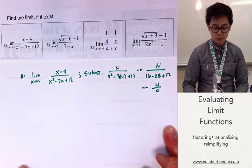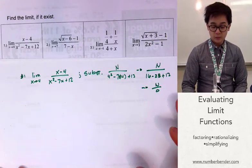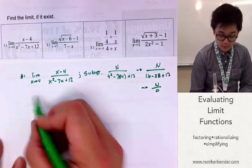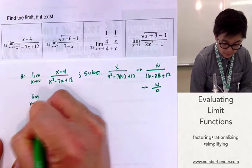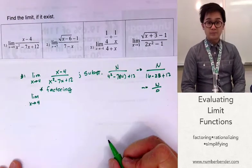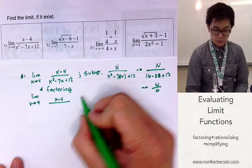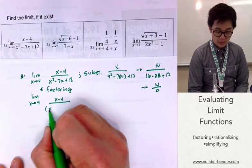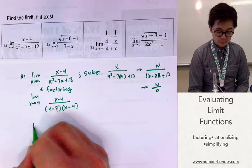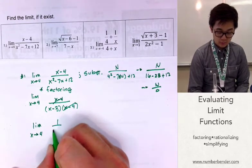16 minus 28 plus 12 gives us 0, so the function is undefined at x equal to 4. Let's see if we can modify it using factoring. We have x minus 4 all over, and the factors of x squared minus 7x plus 12 are x minus 3 and x minus 4.